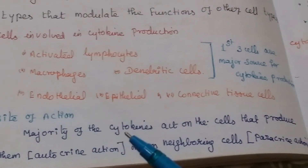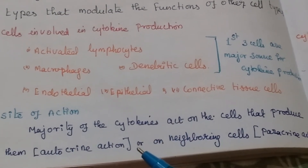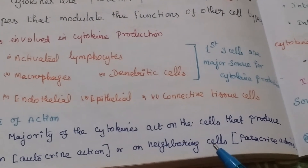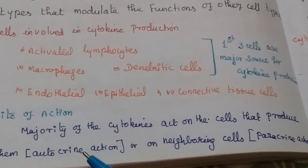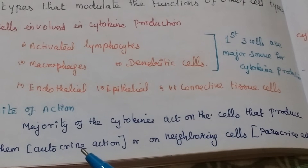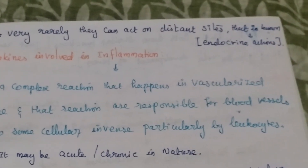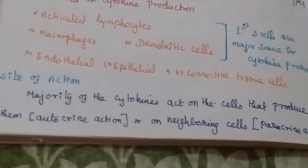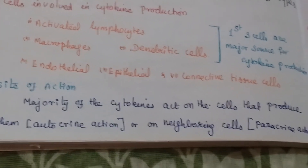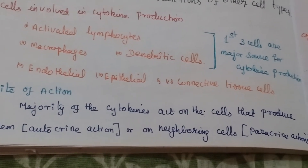Site of action: the majority of cytokines act on the cell that produced them — this is called autocrine action — or on neighboring cells, called paracrine action. Very rarely, they can act on a distant site; that is called endocrine action. So there are three types of action: autocrine, paracrine, and endocrine.